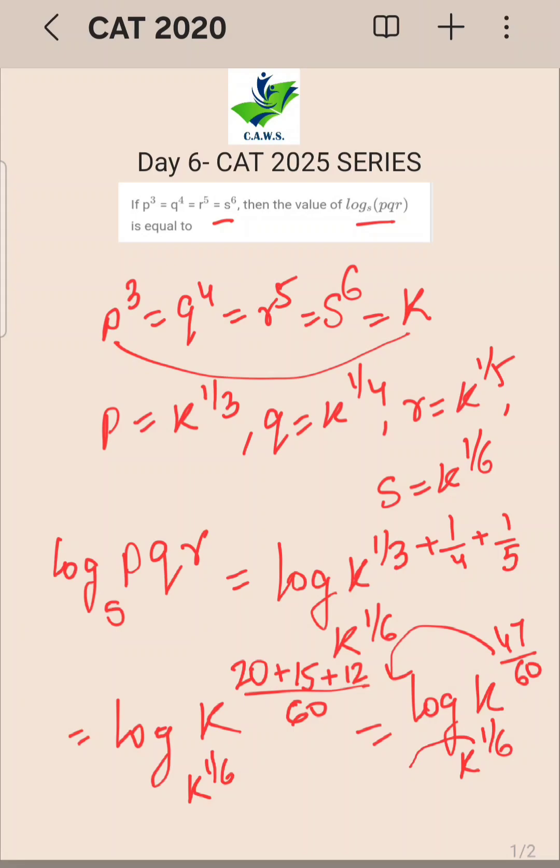Now as per law of logarithm, both the powers will come out. So ee kya ho jayega 47 by 60 upon 1 by 6. So 6 ones are, 6 tens are. So my answer becomes 47 by 10.